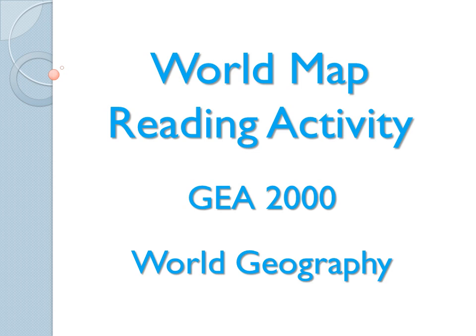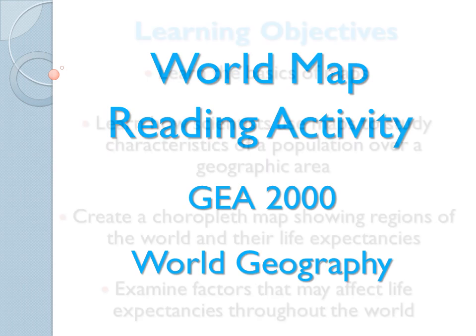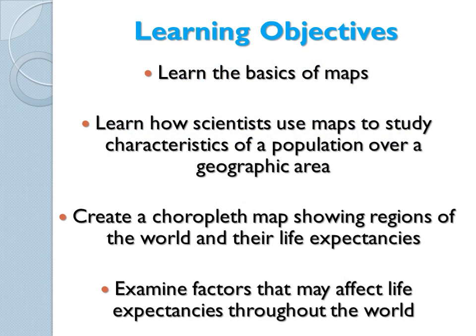Hey everyone, welcome to your first map reading activity for World Geography. Throughout this semester, we will learn all about how maps help us understand the people, places, and environments that make up our diverse and complex world. In this first activity, we will learn how scientists use maps to study characteristics of a population over a geographic area. We will also create a type of thematic map, called a chloropleth map, to show how life expectancy varies throughout the world, and then take a look at some of the factors that may cause those variations.